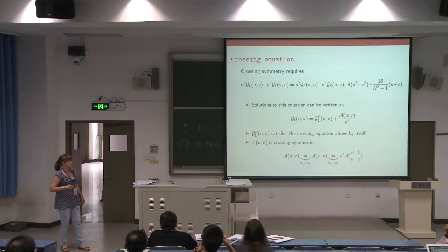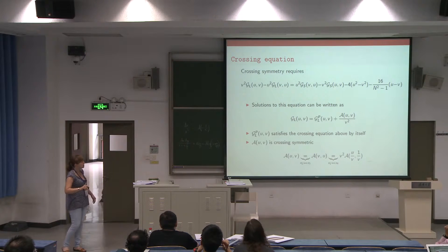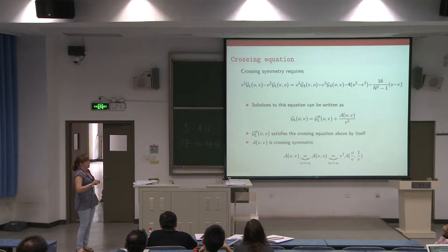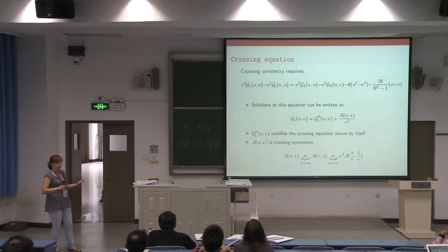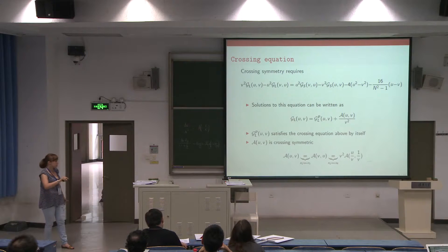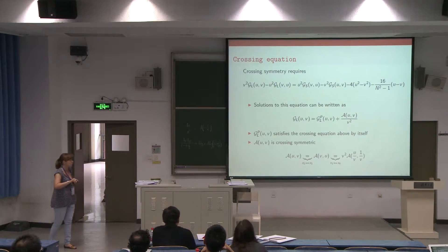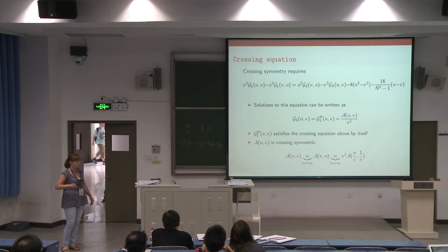Here I wrote the crossing symmetry for this four-point function. The left part depends only on the long part, and the right-hand side is essentially fully fixed. We would like to find a solution to this equation. Solutions can be written as g_L equals g_L^particular plus a crossing-symmetric function. The particular solution satisfies crossing symmetry by itself. Crossing symmetric means it has the property that exchanging positions one with three and one with four gives the same result.